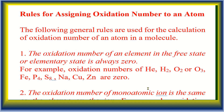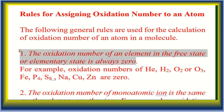Now, rules for assigning oxidation number to an atom. Rule 1: The oxidation number of an element in the free state or elementary state is always zero. For example, the oxidation number of He, H₂, O₃, Fe, P₄, S₈, and Zn are all zero. In the neutral free state, all elements have oxidation number zero.